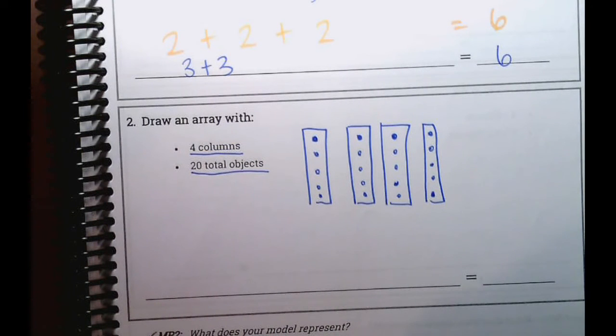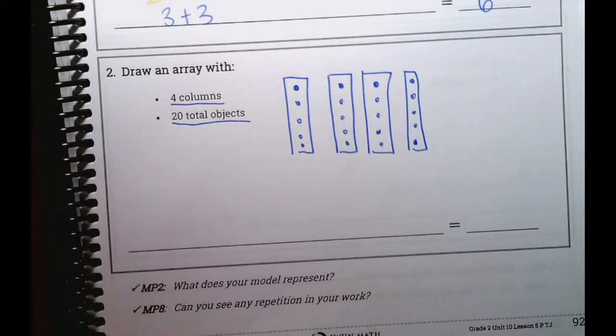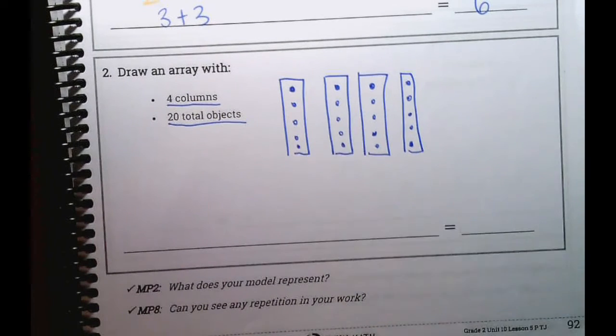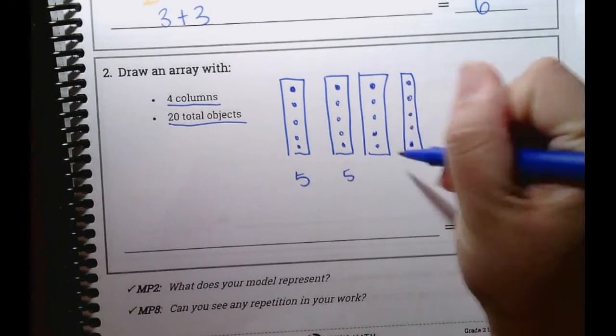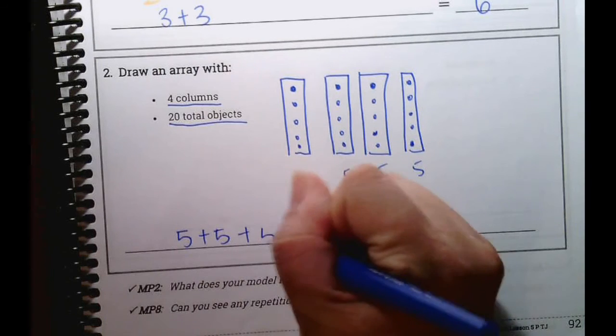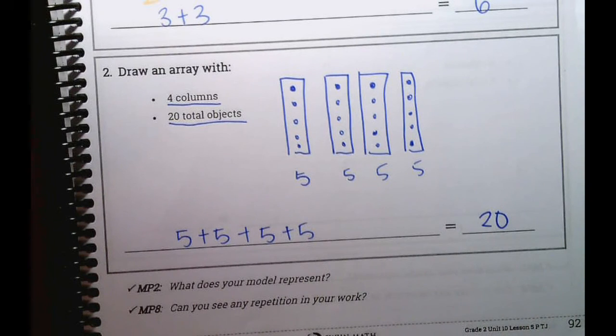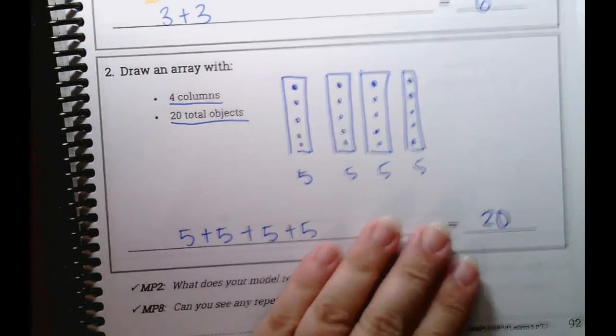So now there are our 20 objects. And I have my four columns. With this information now, I can figure out what my columns are. But from here, I can already do what they're asking me to do. They want me to write a sum of equal groups. So what kind of addition sentence can I write right here? What repetition addition sentence can I write? One, two, three, four, five. This column has five, and so does this one, this one does too, and this one. So we can write five plus five plus five plus five equals 20. Easy peasy.